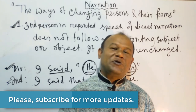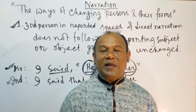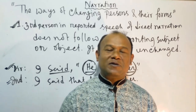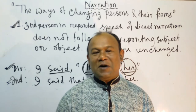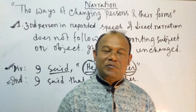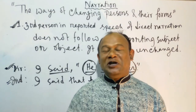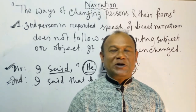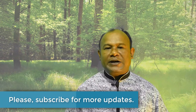Dear learners, to summarize: if we get first person in reported speech, it follows the reporting subject. If we get second person in reported speech, it follows the reporting object. Third person remains unchanged. I have tried my level best to show how reporting subject follows the forms of first person and reporting object follows the forms of second person. If you found this video helpful, please leave a comment.